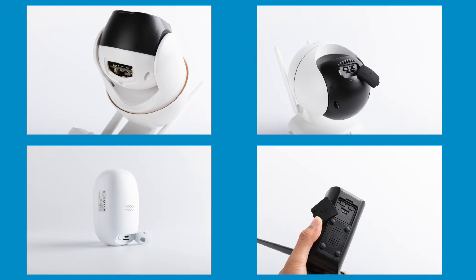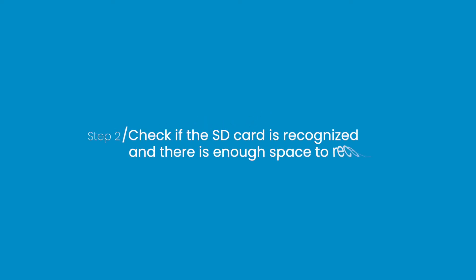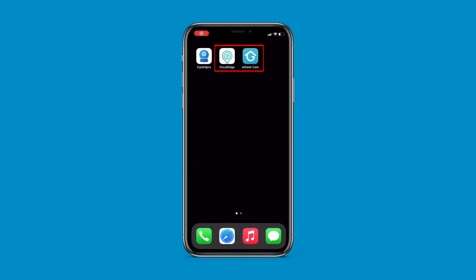The slot could be found on the bottom, back, or side of the camera. Step 2: after installing the SD card for your ieGeek camera, check if the SD card is recognized and there is enough space to record. Check the SD card space via the ieGeek Cam or CloudEdge app — these two operate in the same way.